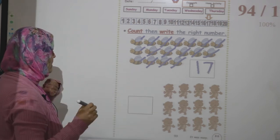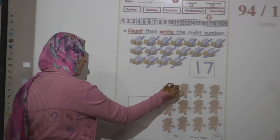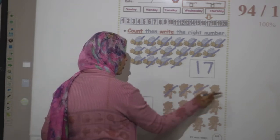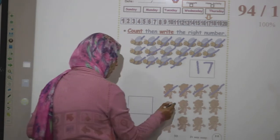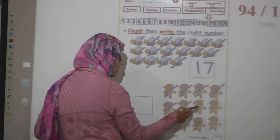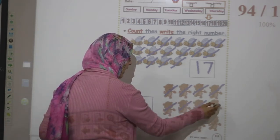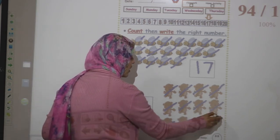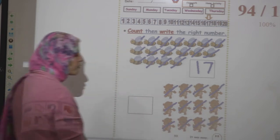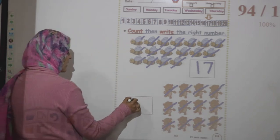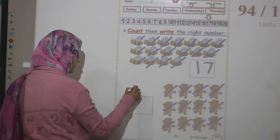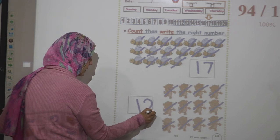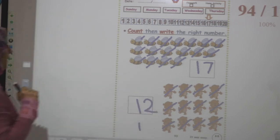Here, let's count how many teddy bears do you have. One, two, three, four, five, six, seven, eight, nine, ten, eleven, twelve. How do we write number 12? Stick down, have a heart, sleeping dash.